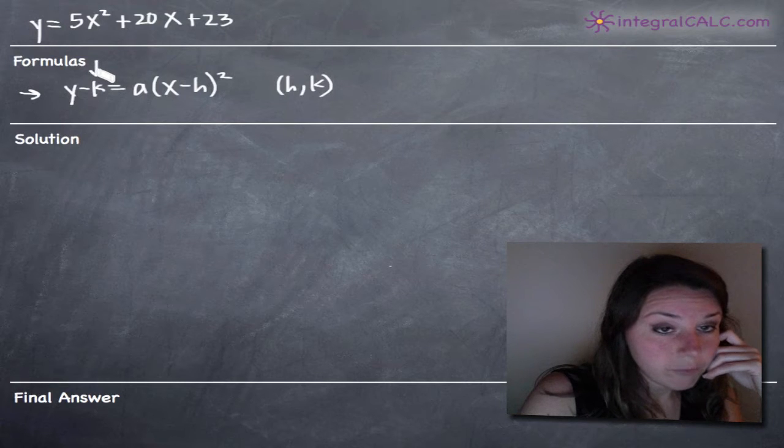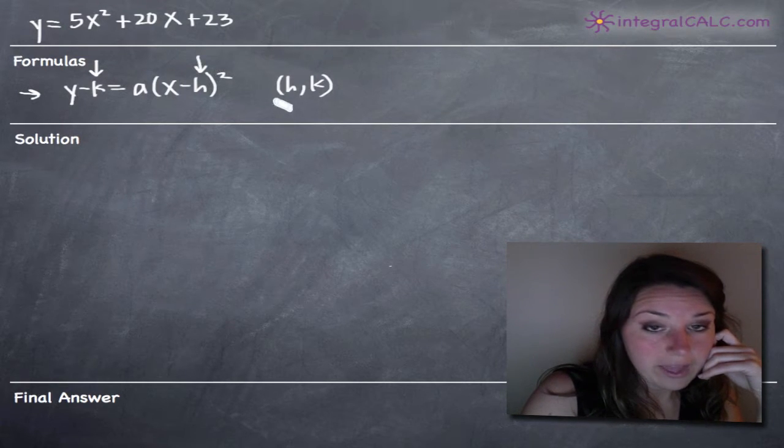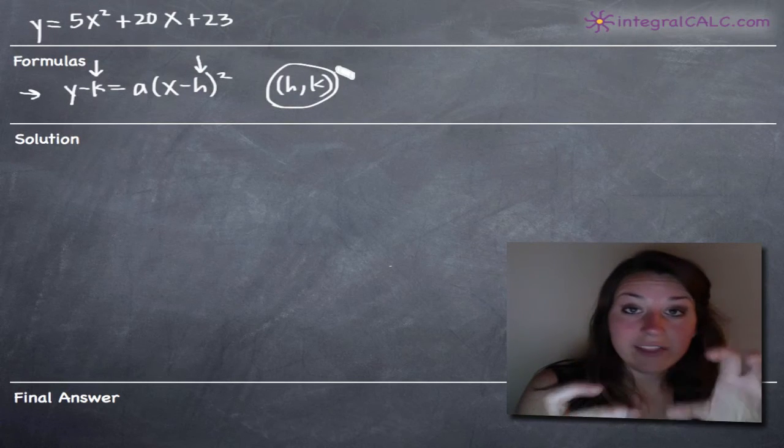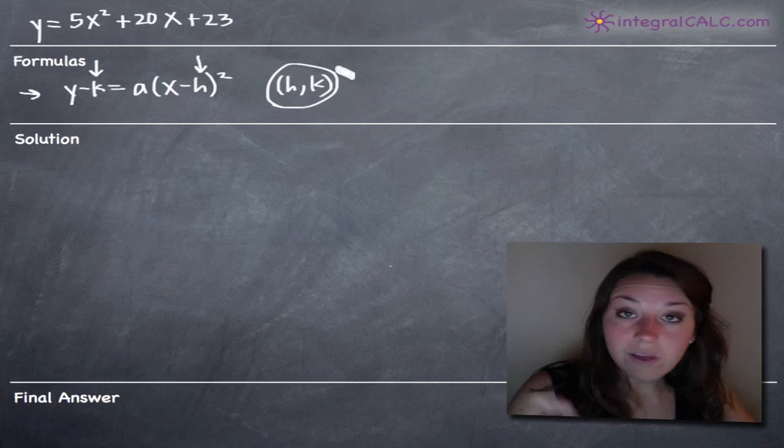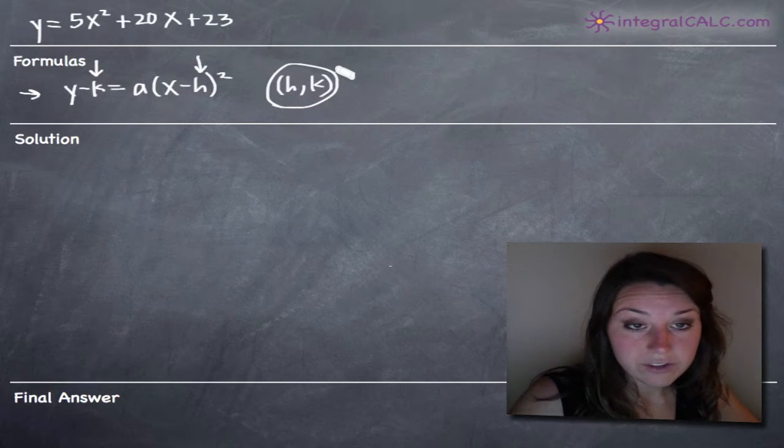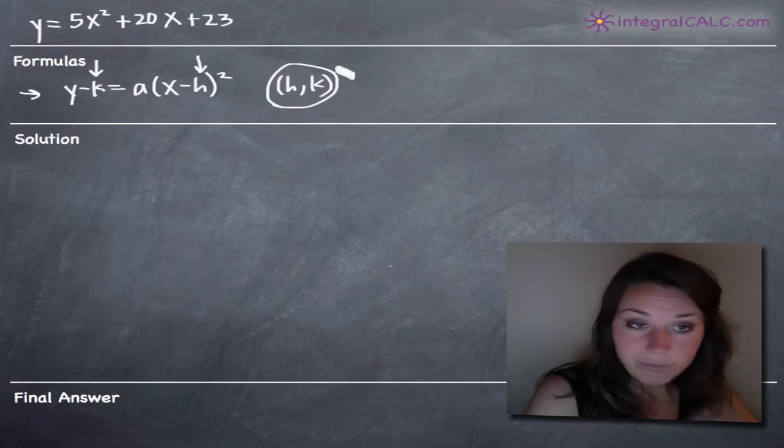The vertex of the parabola is going to be at the coordinates h,k which we've set here. So h,k, we're going to be able to extract that information and that will allow us to plot the vertex of our parabola and then draw the parabola or sketch the graph from there.